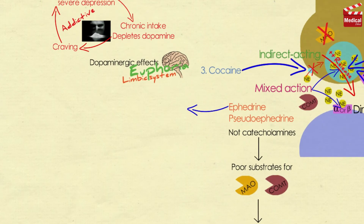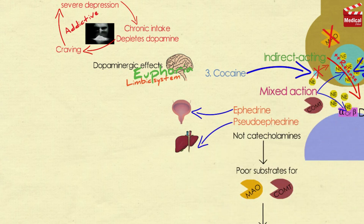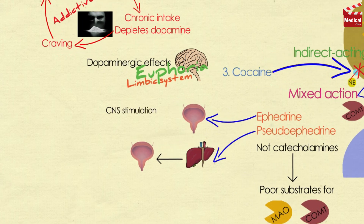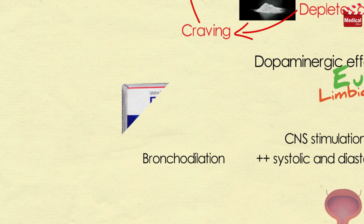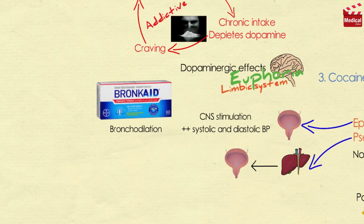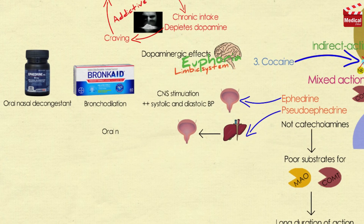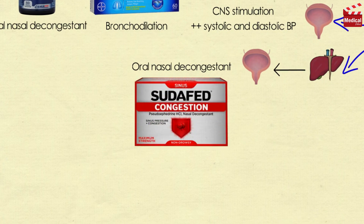Ephedrine is eliminated largely unchanged in urine, while pseudoephedrine undergoes incomplete hepatic metabolism before elimination in urine. Ephedrine produces mild CNS stimulation and raises systolic and diastolic blood pressures by vasoconstriction and cardiac stimulation. It also produces bronchodilation, but is less potent and slower acting than epinephrine or isoproterenol, so it can be used to prevent asthma attacks. It can also be used as an oral nasal decongestant.